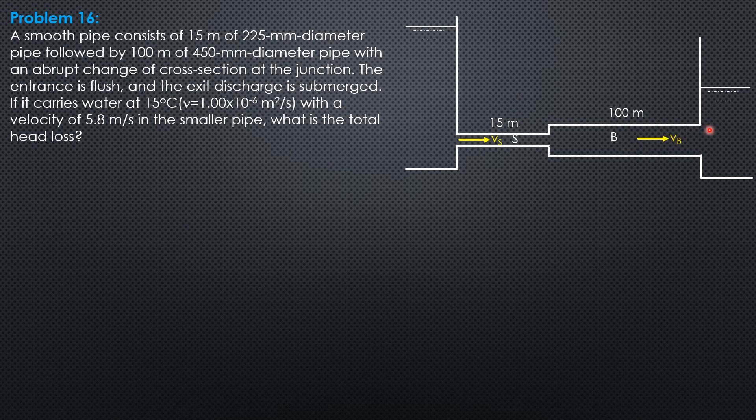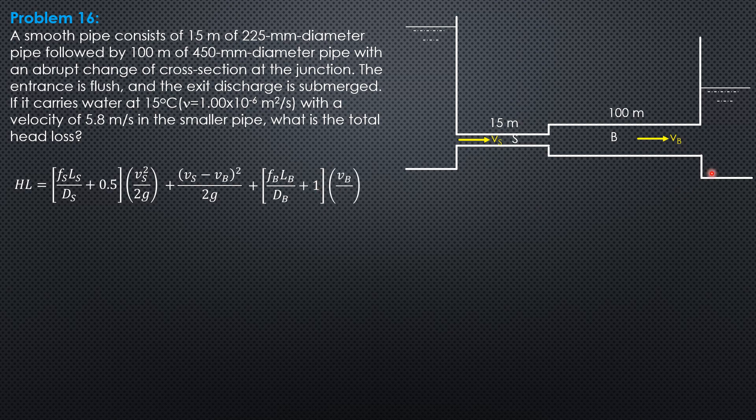And submerged exit, all functions of the mean velocity in the bigger pipe. So the head loss is Fs Ls over diameter s, plus 0.5 of velocity head in the smaller pipe, plus this sudden enlargement here, which is quantity Vs minus Vb squared over 2g, then plus in the bigger pipe we have friction Fb, Lb over diameter b plus 1, because the K here is 1, of the velocity head in the bigger pipe. That's the total head loss.